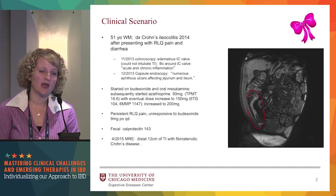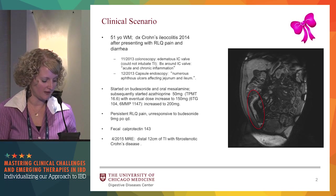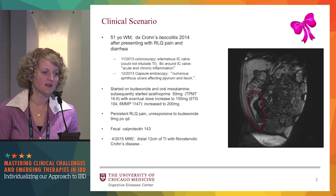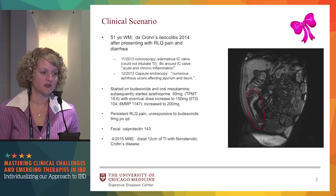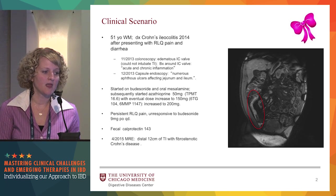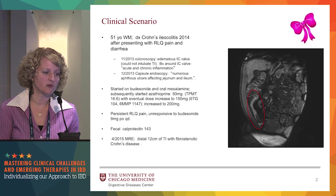A month later, he underwent a capsule endoscopy that also showed aphthous ulcers in the jejunum and ileum. At that time, he was started on budesonide and oral mesalamine. Subsequently, he had a low normal TPMT and was started on low-dose azathioprine at 50 milligrams a day. Based on his metabolite levels, he was gradually increased from 150 to 200 milligrams a day. He persisted to have right lower quadrant pain and wasn't responding well to budesonide.